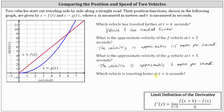For the last question: which vehicle is traveling faster at t equals six seconds? Let's begin by determining the points on both graphs where t equals six seconds. In this case, it happens to be the point of intersection, which indicates that at t equals six seconds, the vehicles have traveled the same distance. But our question is which vehicle is traveling faster. Focusing on the red line, the slope of the tangent line at this point is the same as the slope of f of t, which we know is 1.5.